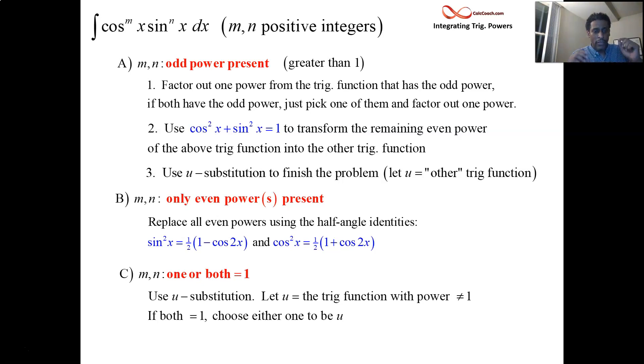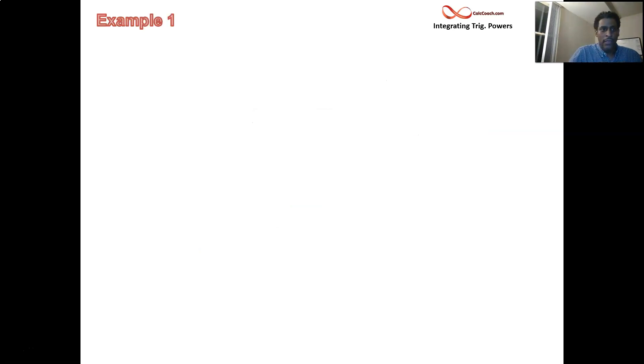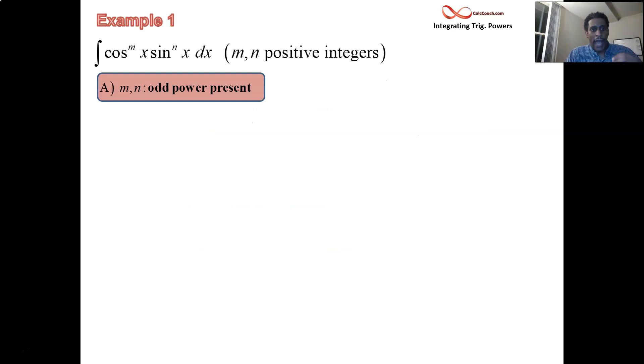All right, so that's the method. You decide on what you do based on the presence or absence of an odd power greater than one. All right, great. Let's see an example of letter A, where we have an odd power present that's greater than one. How are we doing on time? Are we good?